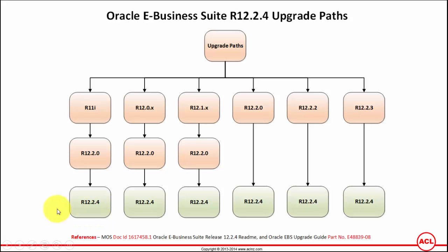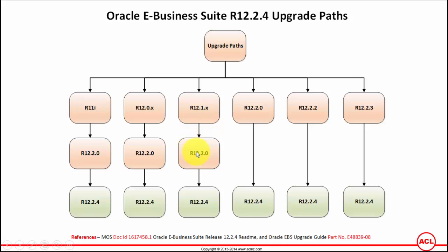As an example, if you are running Oracle eBusiness Suite on release 11i, then you must first upgrade to release 12.2.0 and only then you can upgrade it further to the latest 12.2.4. Similarly, if you are running either release 12.0.x or 12.1.x, you must first upgrade to 12.2.0 and then to 12.2.4.